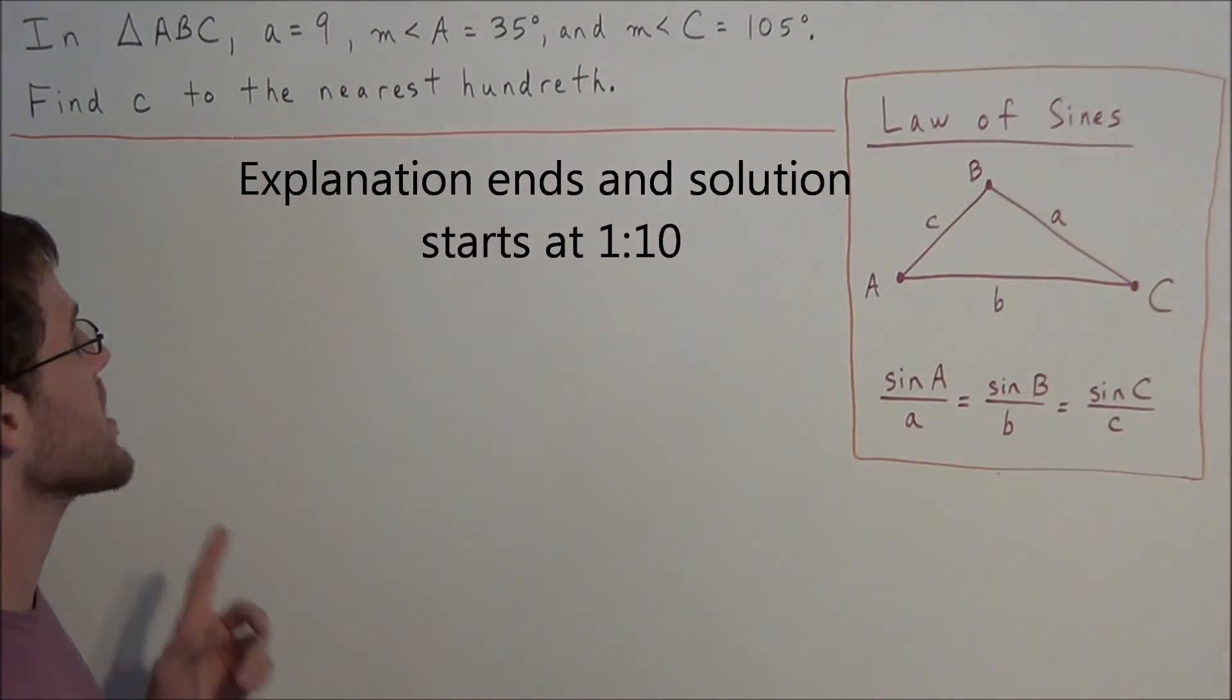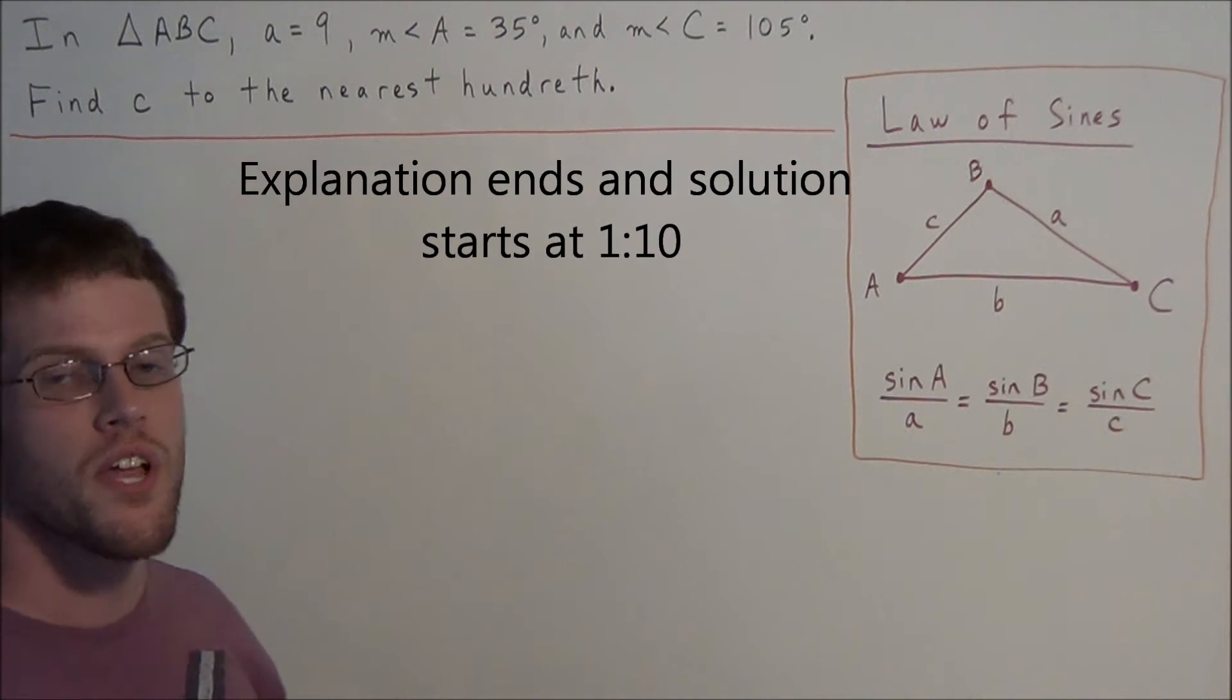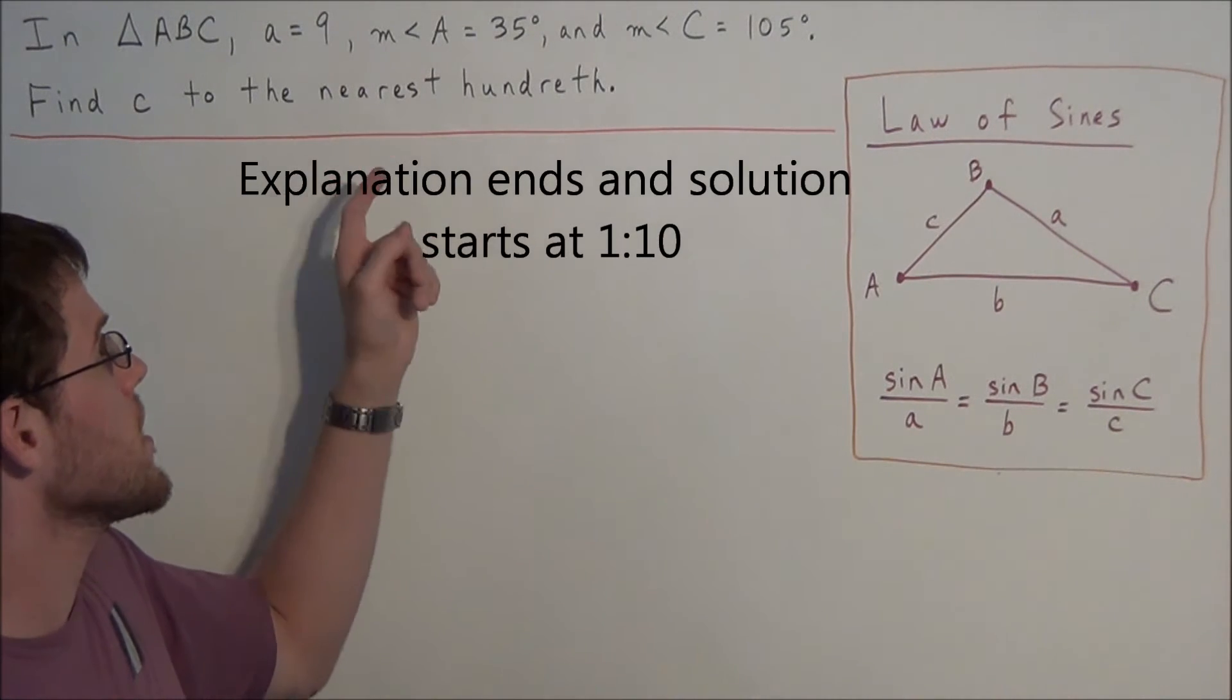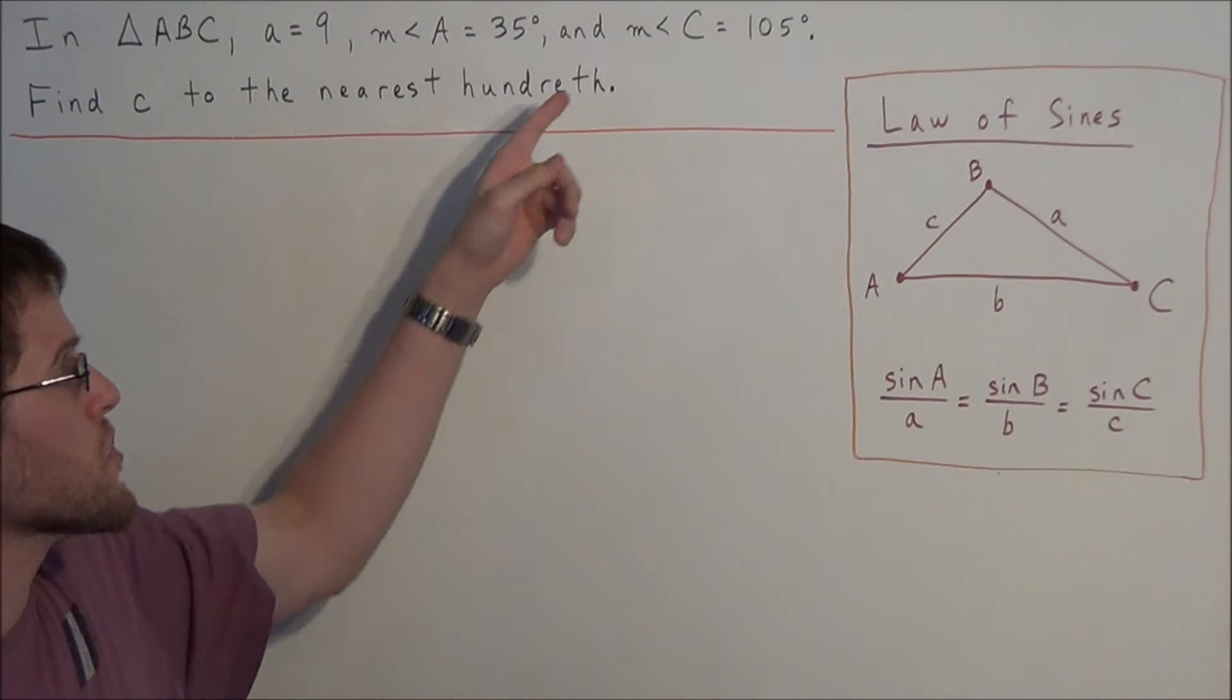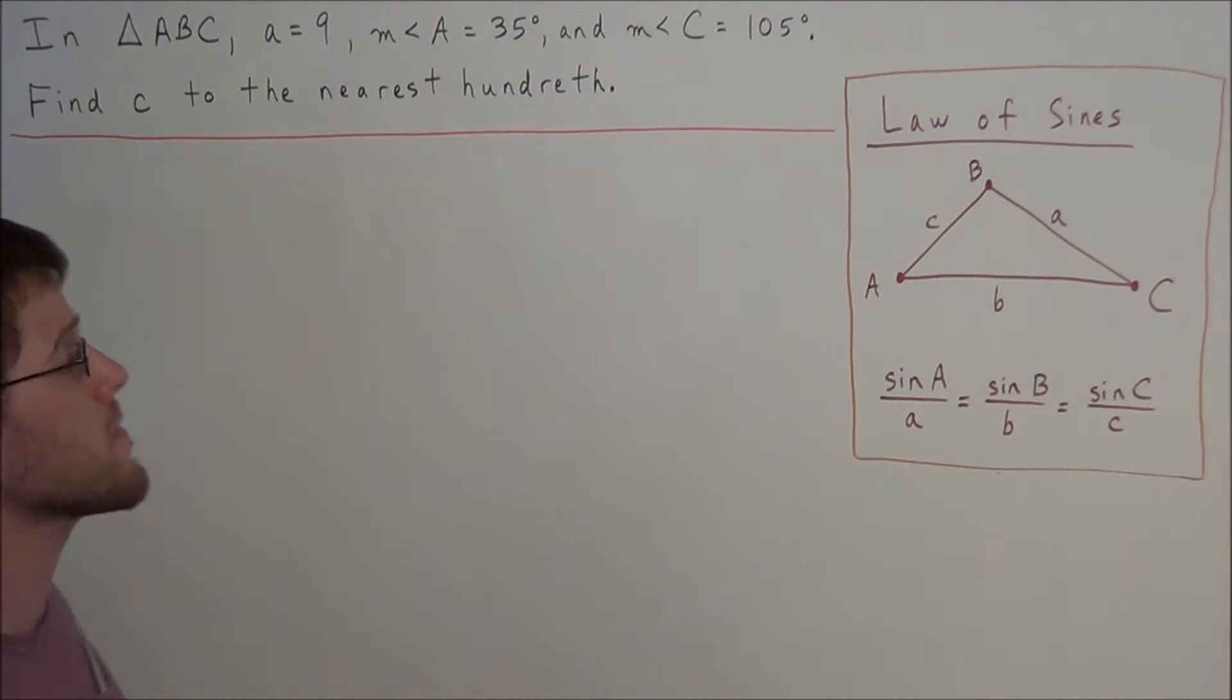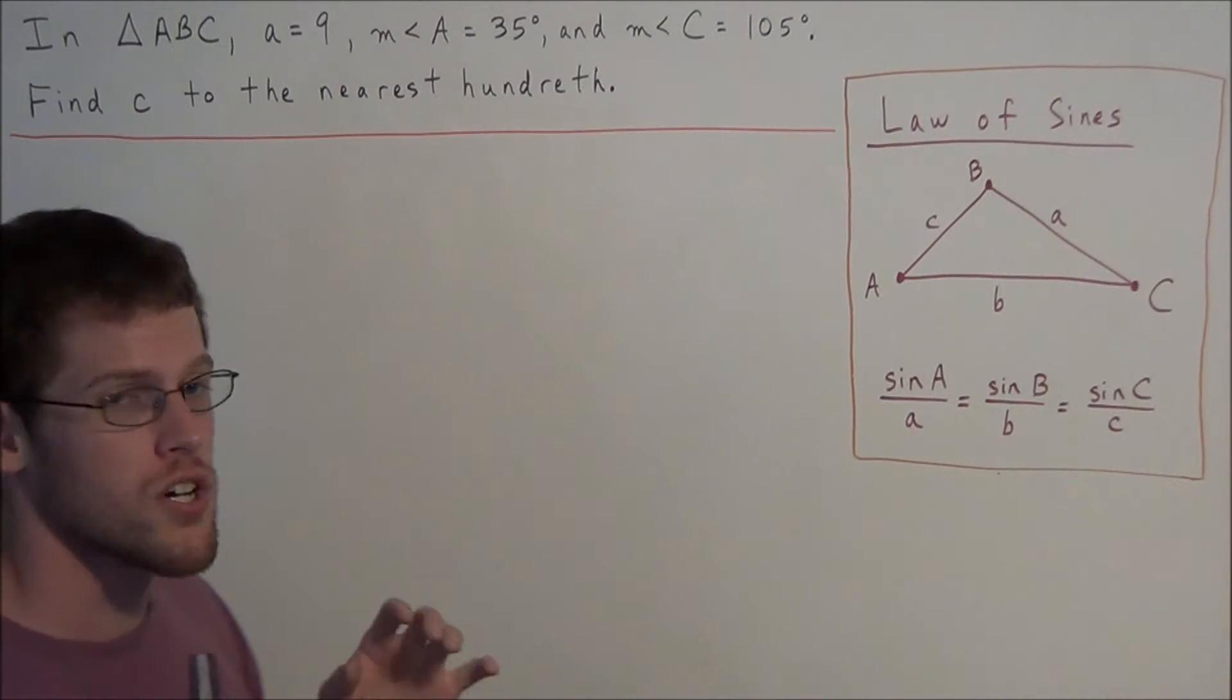So we have the problem: in triangle ABC, a equals 9, the measure of angle A equals 35 degrees, and the measure of angle C equals 105 degrees. And we need to find side c to the nearest hundredth.